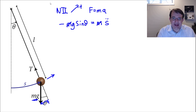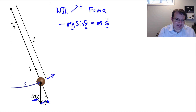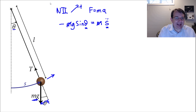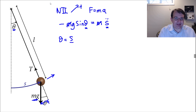We can cancel the m's, but we have two variables: theta on one side and arc length s on the other. As the mass moves, both s and theta change together, so there is a relationship between them. To eliminate one variable, we use the definition of angle theta: theta equals the arc length s divided by the radius of the circle. This is the definition of radians.